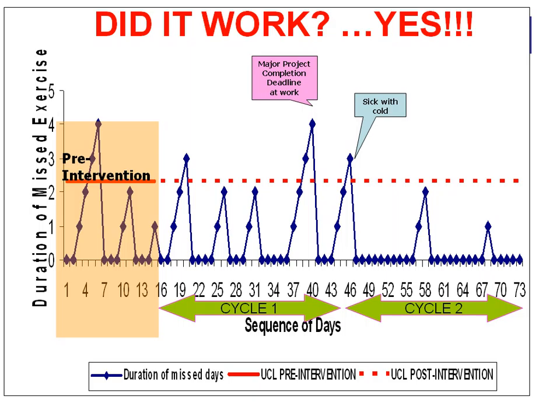Did it work? Yes, but it took some time. The pre-intervention period covers days one through fourteen, followed by cycle one. On the time-between chart — with sequence of days on the x-axis and duration of missed exercise on the y-axis — there was really no improvement during cycle one. Identified reasons included a major project deadline at work between days 37 and 40, and illness with a cold between days 43 and 46. However, in cycle two, the changes are statistically significant. I have definitely succeeded, but it took two cycles of change.